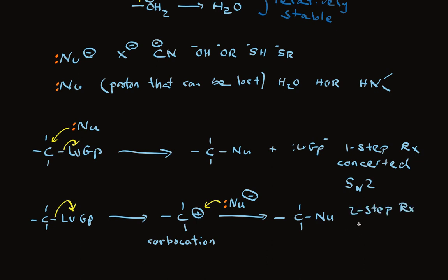And it's called SN1. And it's called SN1 because in this step, which is the slow step, there's only one reactant. Nothing else is participating.